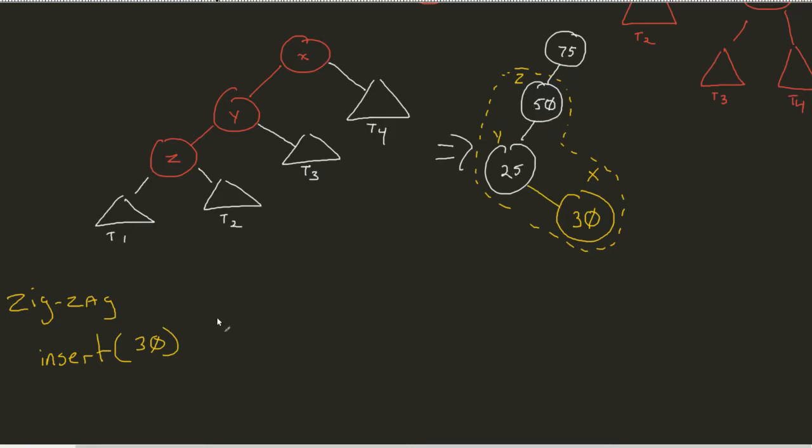So a ZigZag approach, as you can kind of see, once again, has grandparent. And the relationship between the grandparent and the parent, and the relationship between the parent and our node are different. Different relationships between Z and Y, and Y and X.